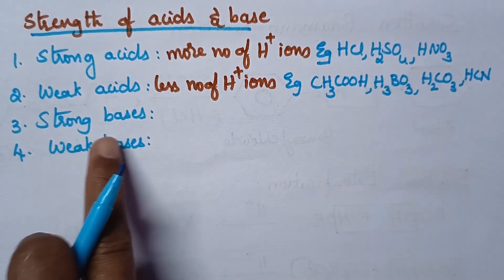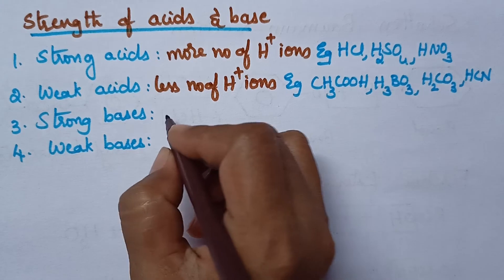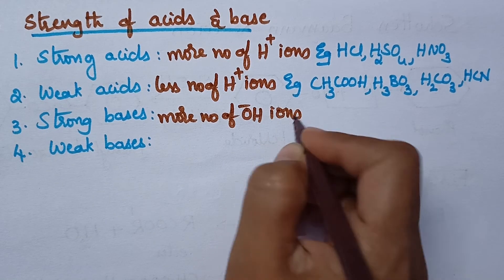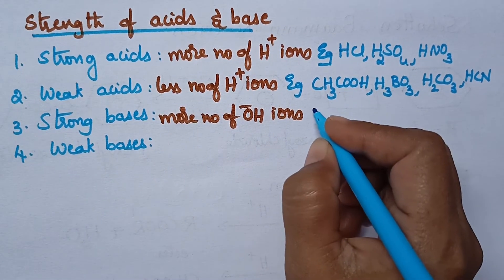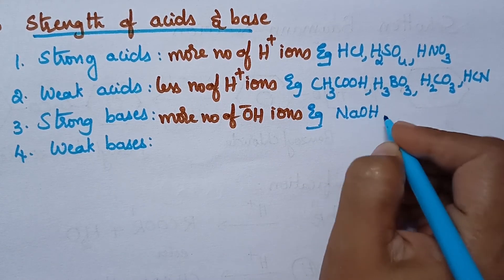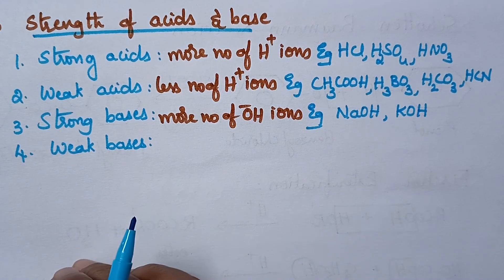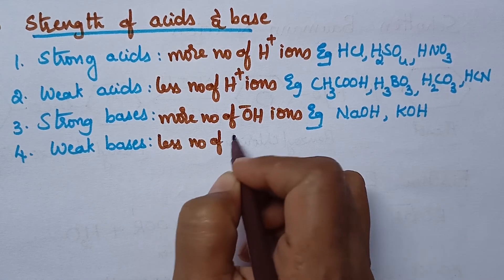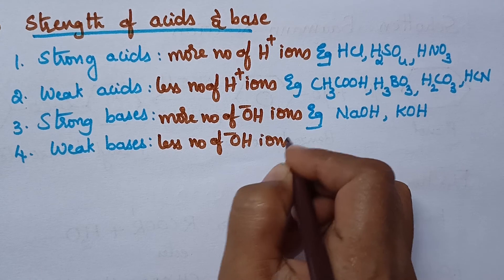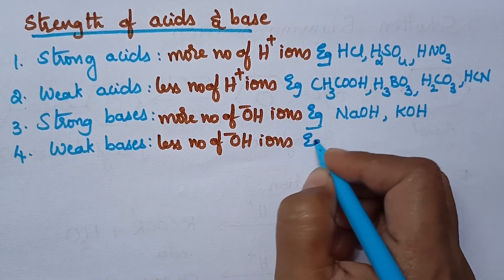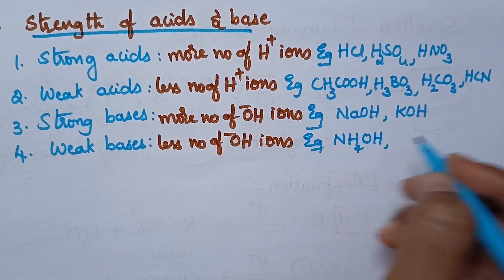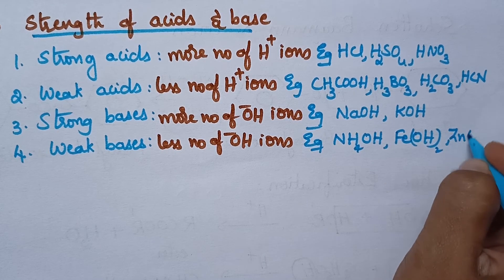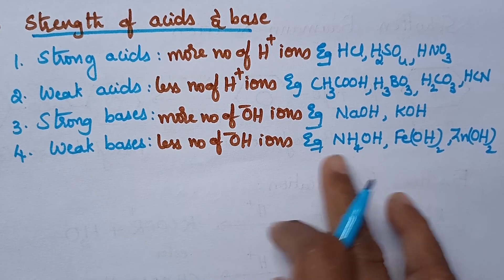Coming to the strong bases, strong bases produce more number of OH- ions in water. Strong bases include NaOH, KOH, etc. On the other hand, a weak base produces less number of OH- ions, and good examples are NH4OH, iron hydroxide, zinc hydroxide, etc. All these are weak bases.